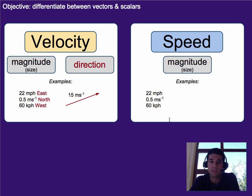Velocity is a vector, which means it has both magnitude and direction. What that means is we have 22 miles per hour, but you also need the east, or 0.5 meters per second, but you also need the north, or 60 kilometers per hour, but you also need the direction west. Alternatively, you can add an arrow like this and tell what the magnitude and direction is.